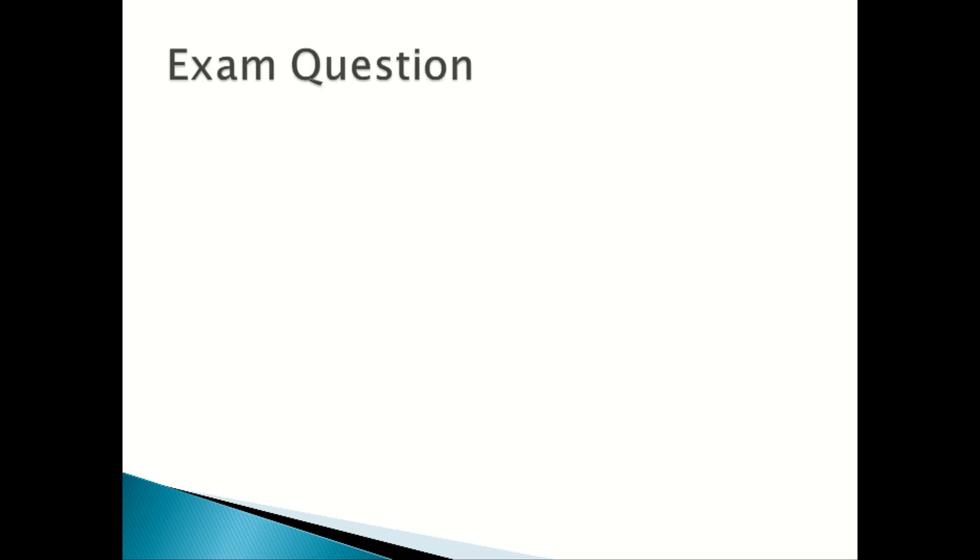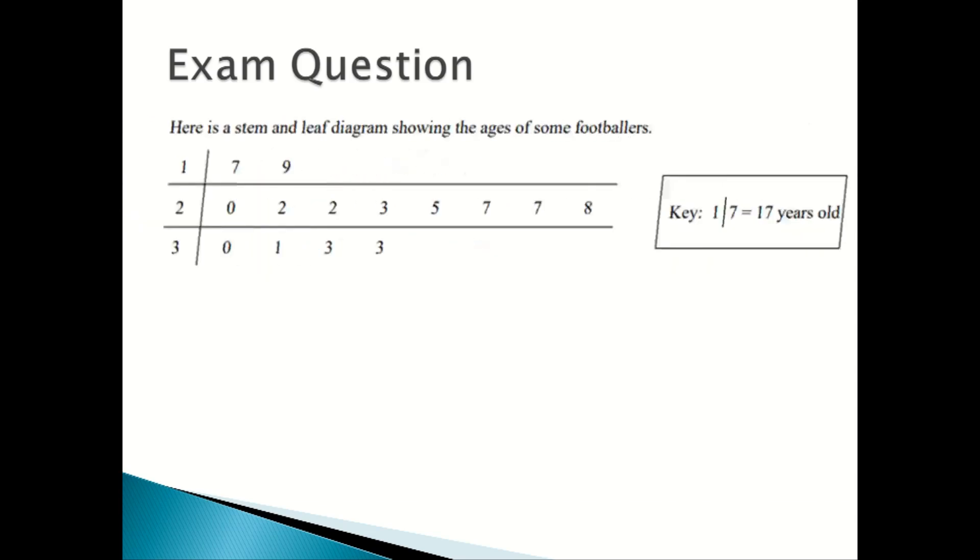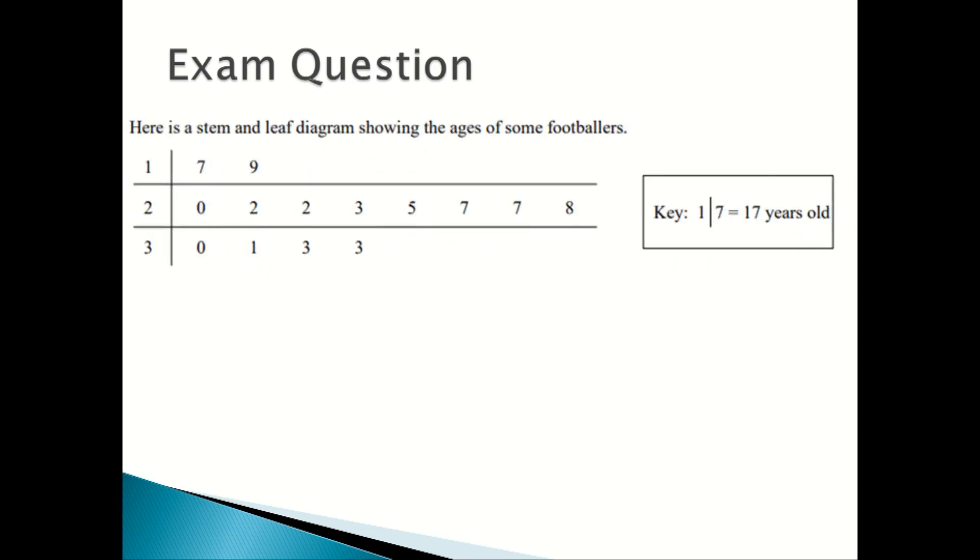Now we're going to look at an exam question. Here is a stem and leaf diagram showing the ages of some footballers, and you can also tell from the key that 1|7 is 17 years old.